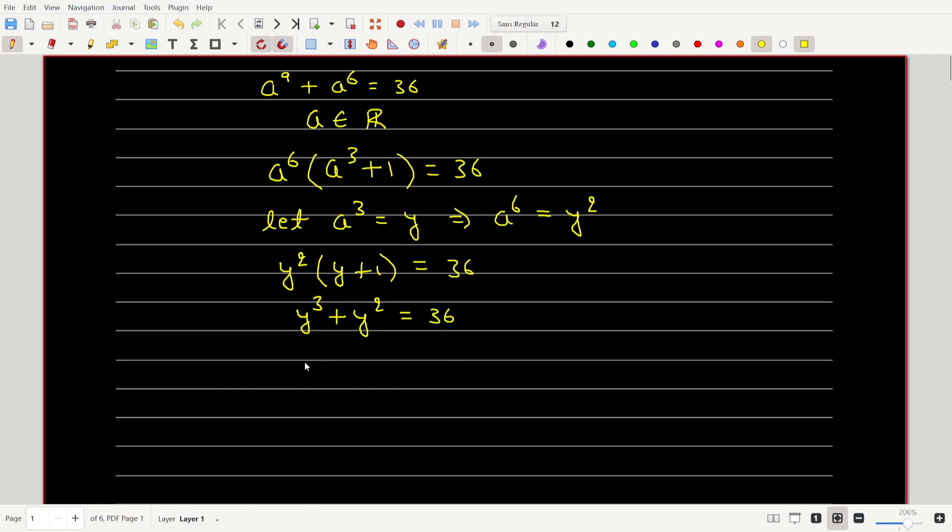Now if we subtract 36 from both sides, we'll get y cube plus y square minus 36 equals 0.